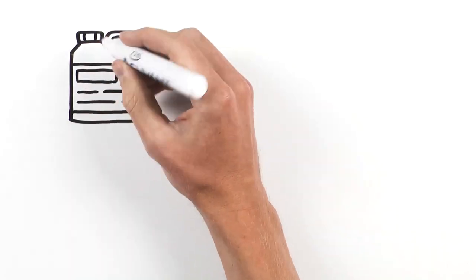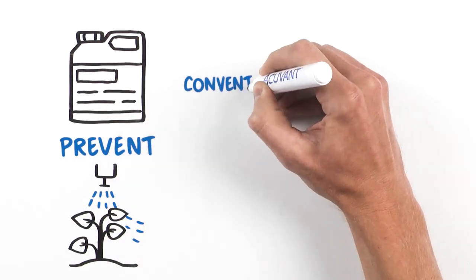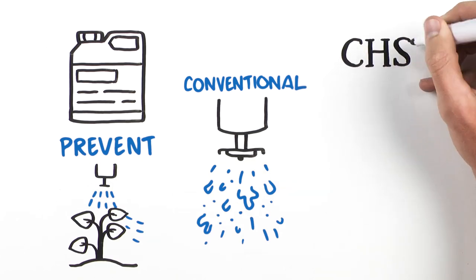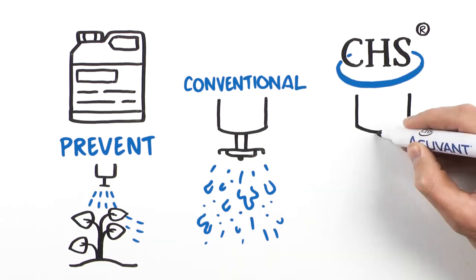How does this next generation formula prevent drift? Compared to conventional drift and deposition adjuvants, CHS Acuvant helps produce the right spray droplet size more uniformly.